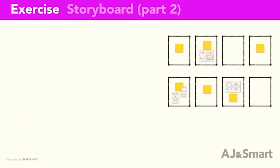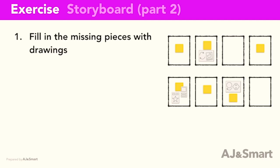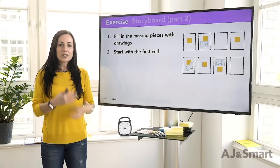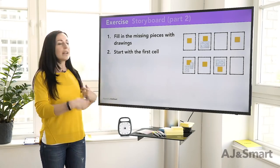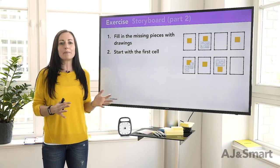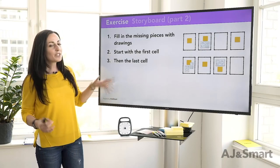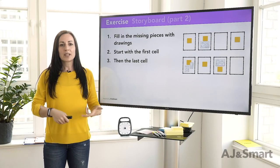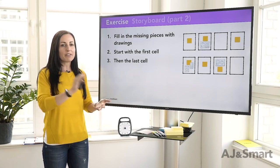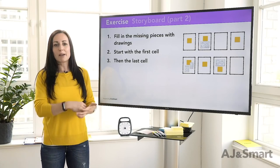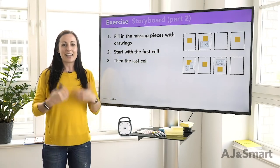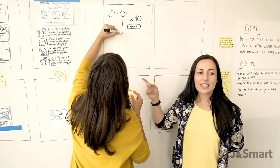Now you can go into part two of the storyboard, filling in the missing pieces by drawing around them or taking a drawing that's already there and building on it as a base. It's a great idea to start with the first cell — that's often something simple like a Google page, an email, or a Facebook ad. Then go to the very last box and draw what's there, which might be a final click to buy something, a confirmation, or sharing with a friend. Doing those first two helps the team feel a sense that they're actually getting somewhere, and then it's a lot easier to see what happens in between.